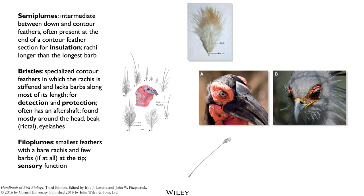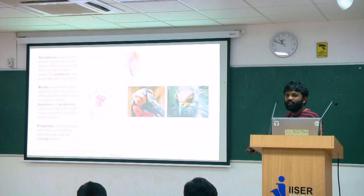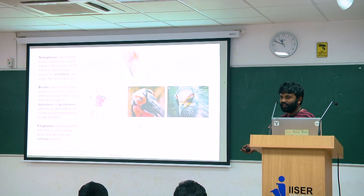Then you have filoplumes, which are the smallest feathers — they only have a few barbs right at the top. But the most important ones are down feathers, contour feathers, and flight feathers.